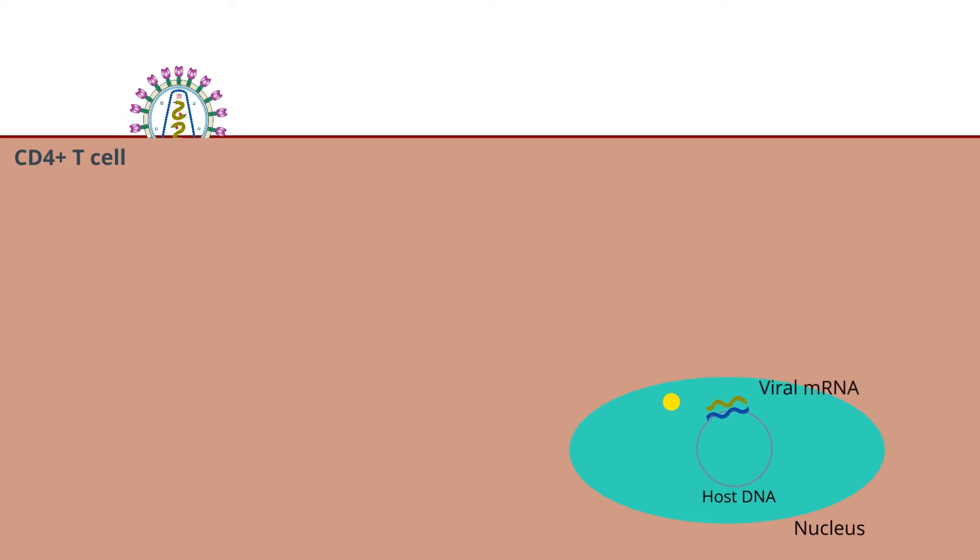Some of the RNA is translated to produce viral proteins by host cell ribosomes. Viral proteins and the complete HIV-1 RNA genome are then assembled into new virions that bud from the infected host cell. Eventually, the host cell undergoes lysis.